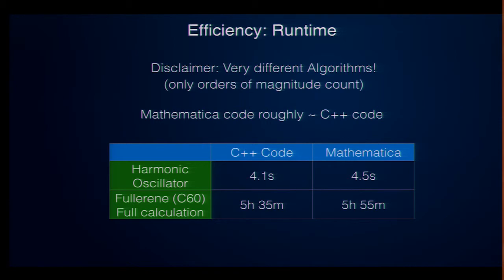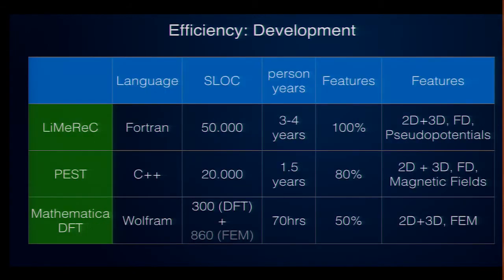The type of efficiency I usually mind more than efficiency at runtime is actually my time. How long does it take me in developing the thing? So, again, this is a very rough comparison. The Fortran code needed about 50,000 lines of code just for the numerical simulation and took about roughly three person years to develop. To give you a scale of comparing, because the features of those codes don't exactly overlap, I've introduced this percent scale where I normalize the older Fortran code at 100%. So, the C++ code was 20,000 lines of code, took one and a half years to develop, and it supports basically 80% of what the Fortran code can do.